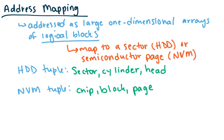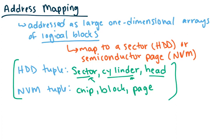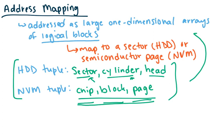The last topic is address mapping. HDDs and NVMs are addressed as one large one-dimensional array of logical blocks, which map to a certain sector or a semiconductor page in the NVM. Without this abstraction, you'd have to pass a sector, cylinder, and head for an HDD, or a chip, block, and page for NVM. Instead, logical blocks create a one-to-one relationship, making it much easier to develop algorithms — you just worry about the logical address.